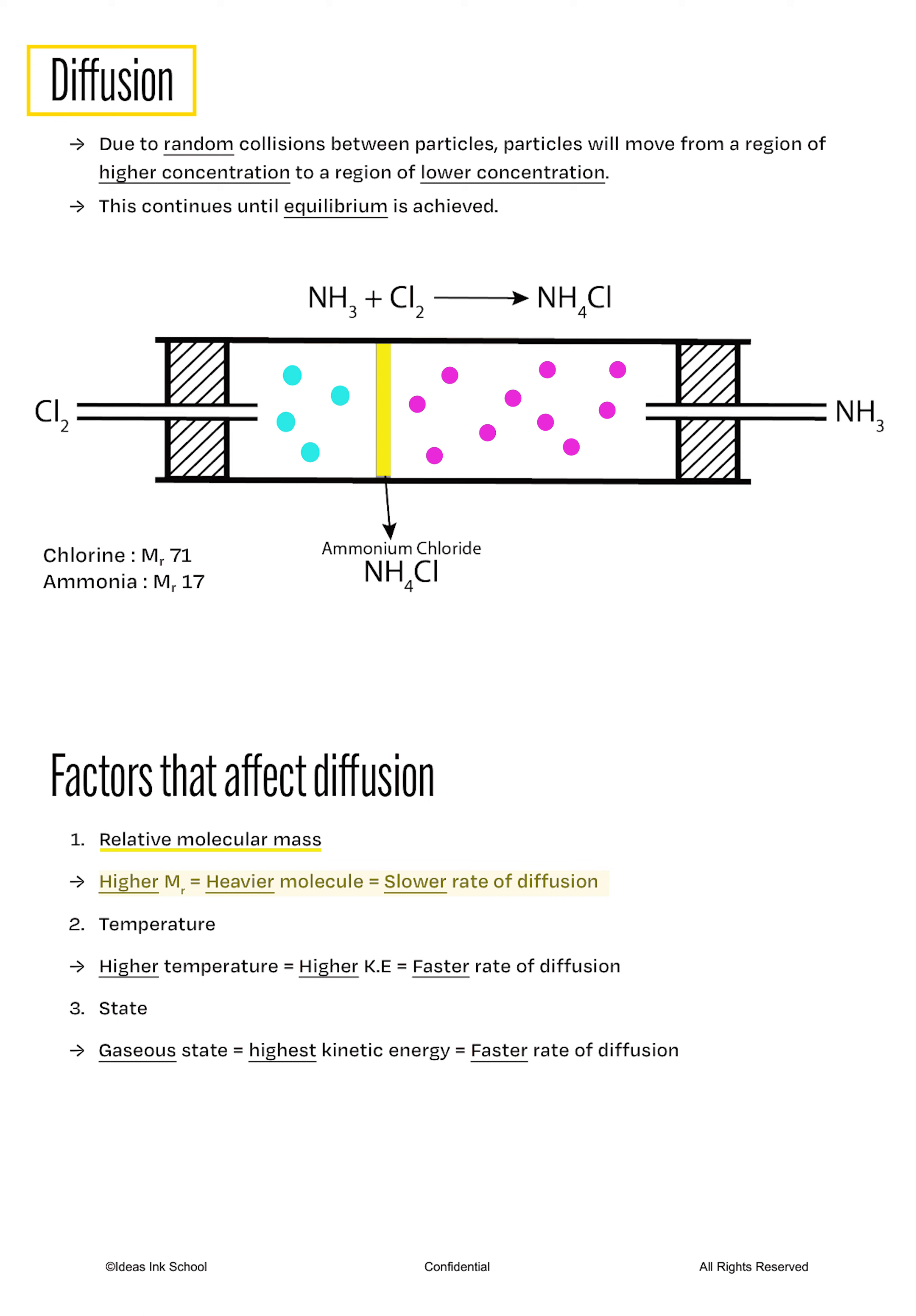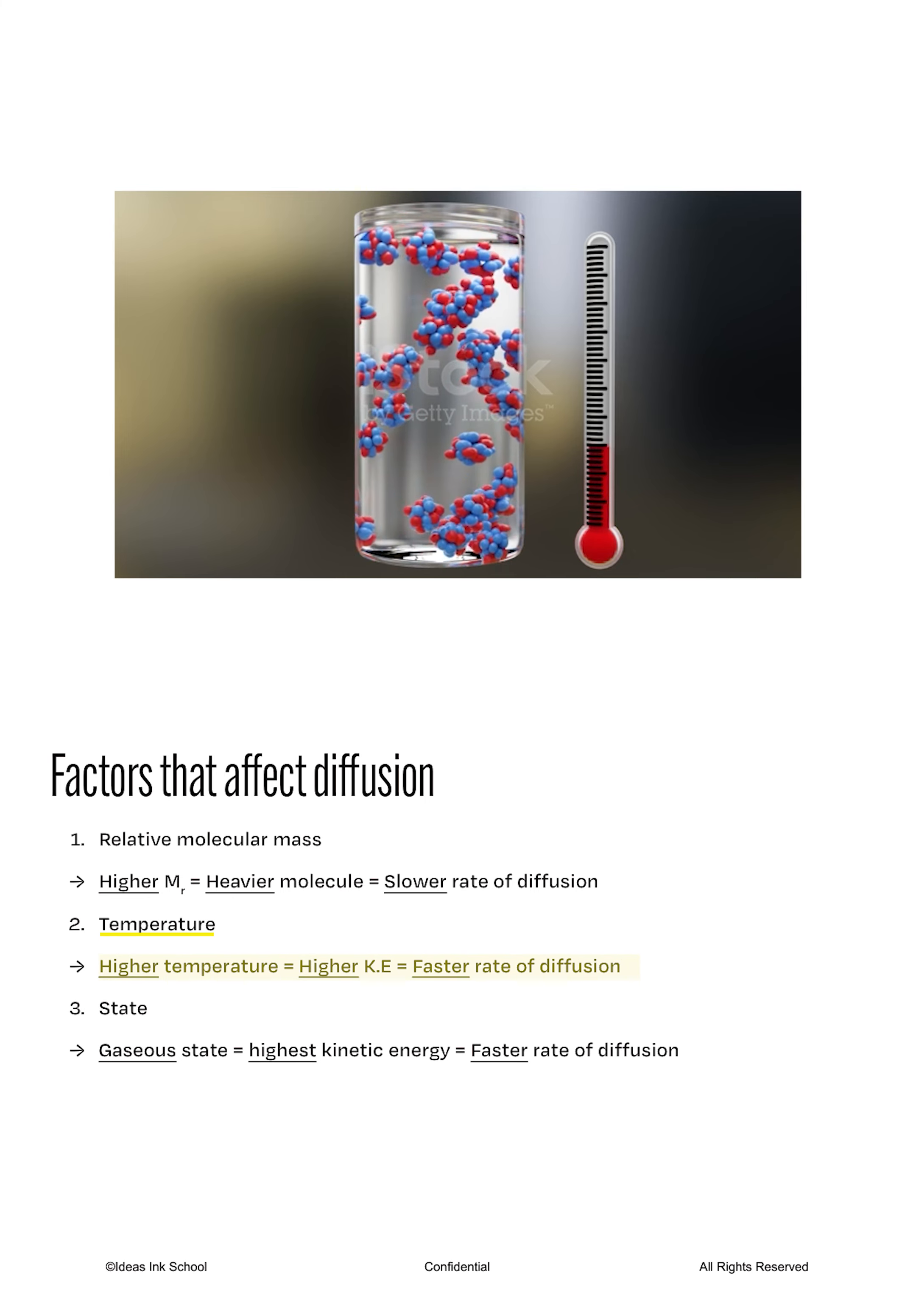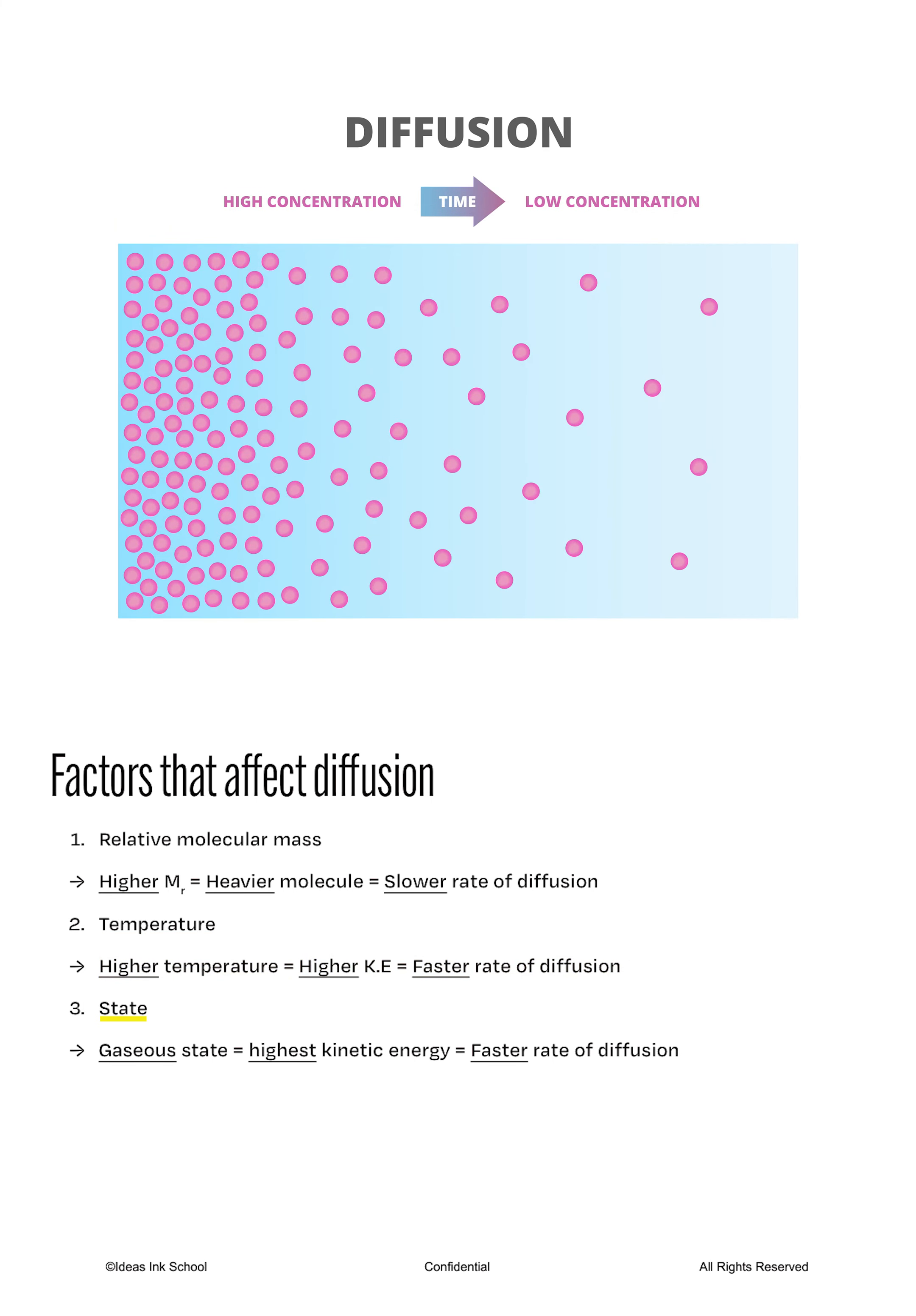But there are two more factors that can affect the rate of diffusion. The next factor is temperature. The higher the temperature, the higher the kinetic energy, thus the faster the rate of diffusion. The last factor depends on the state of matter. Gaseous state has the highest kinetic energy of all three states, thus gases diffuse at the fastest rate, followed by liquids and finally, solids have the slowest rate of diffusion.